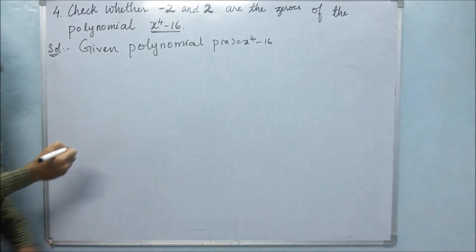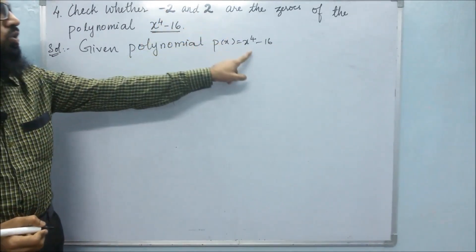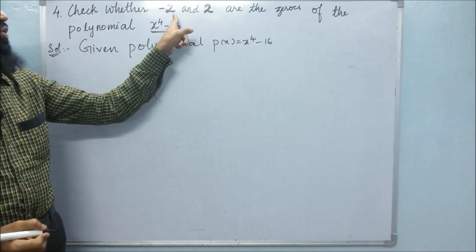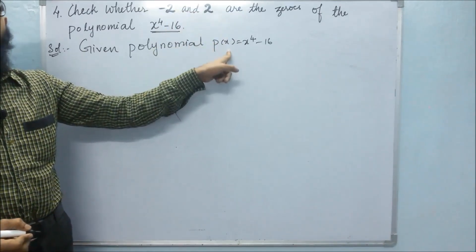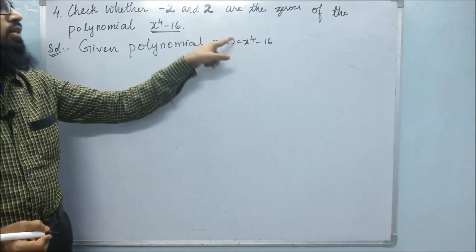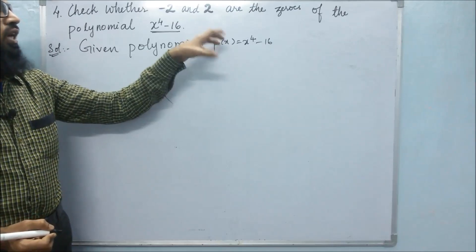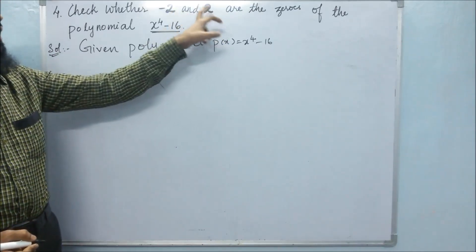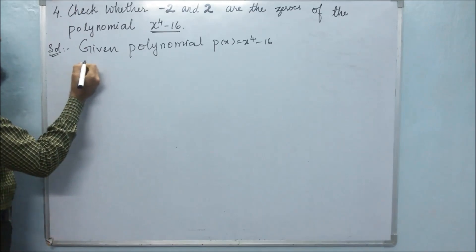For proving that minus 2 and 2 are the zeros, we should substitute these values in place of x and we should get zero. If we get the value zero, then we can say these values are the zeros of this polynomial.